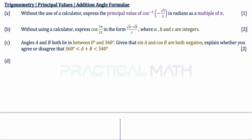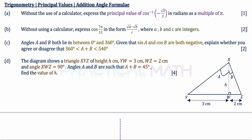In the last part, part D, the diagram shows a triangle XYZ of height H cm, YW is 3 cm, WZ is 2 cm, angle XWZ is 90 degrees, and angles A and B are such that A plus B equals 45 degrees. Find the value of H — a four mark question.